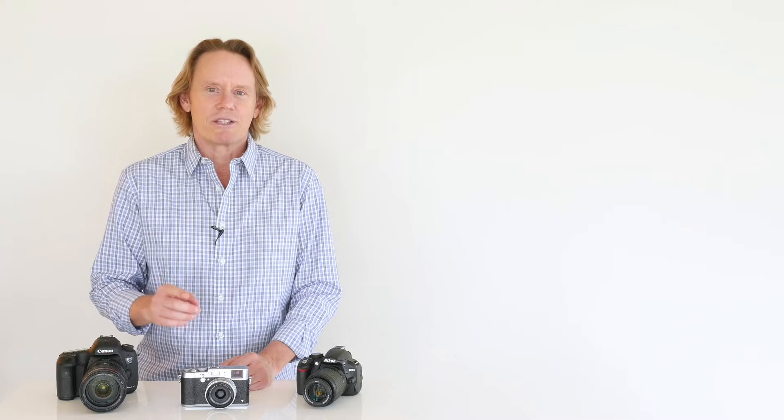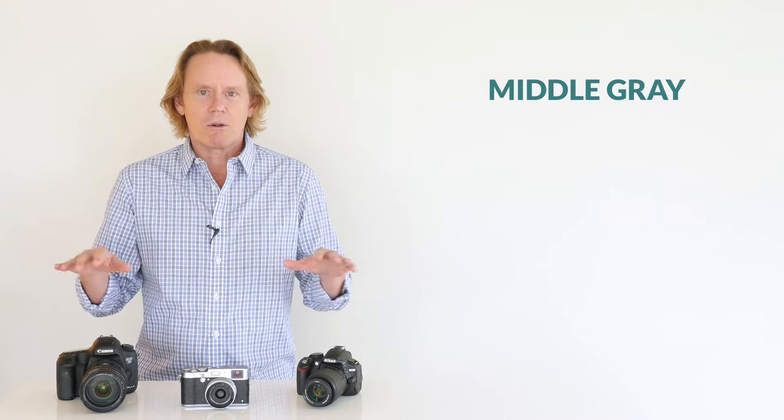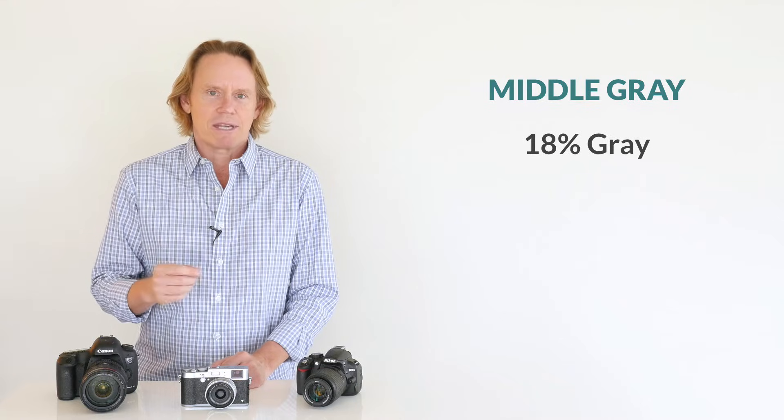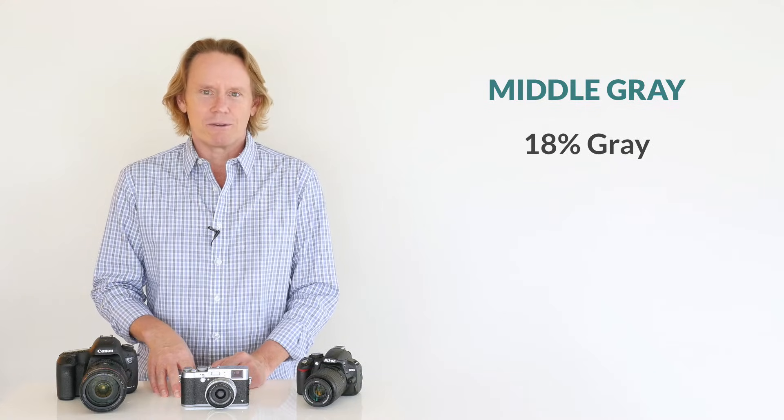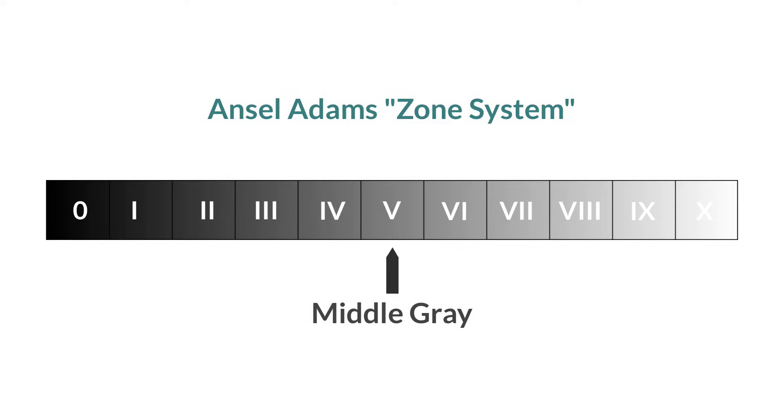The light meter in your camera is always trying to do one simple thing. It's trying to allow enough light to come into the camera to create an exposure level known as middle gray. This is also known as 18% gray for technical reasons that we don't need to go into. It's called middle gray because to human perception, it's a gray that's about halfway between black and white. The famous landscape photographer Ansel Adams helped define the zone system which placed 18% gray in the middle. And to this day, that is still the standard by which all cameras are calibrated. So the light meter in your camera is always trying to create middle gray. If the light meter could have its way, every one of your photos would look like this.